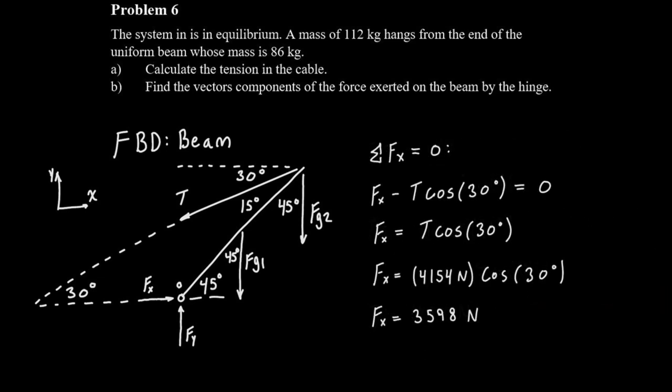We can use sum of forces in the x direction and sum of forces in the y direction to find the vector components of the force exerted on the beam by the hinge. Now that we know the tension in the cable for the sum of forces in the x direction we're only going to have two forces. So we'll have Fx which we're going to say is positive because we've drawn it going to the right. And then we'll have a portion of the tension which is going to be negative because it's going to the left. So we'll have Fx minus T cos 30 equal to zero. Then we can rearrange for Fx plug in our numbers and we get that the x component of the force at that pin is 3598 newtons.